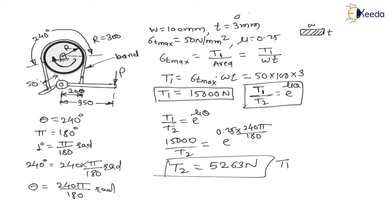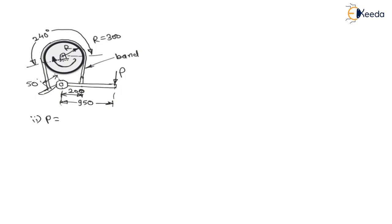We have calculated maximum tension T1 = 15,000 N and minimum tension T2 = 5,263 N. The second question is to find actuating force P. The rotation of the brake drum is clockwise, so for braking we need to apply anticlockwise torque.